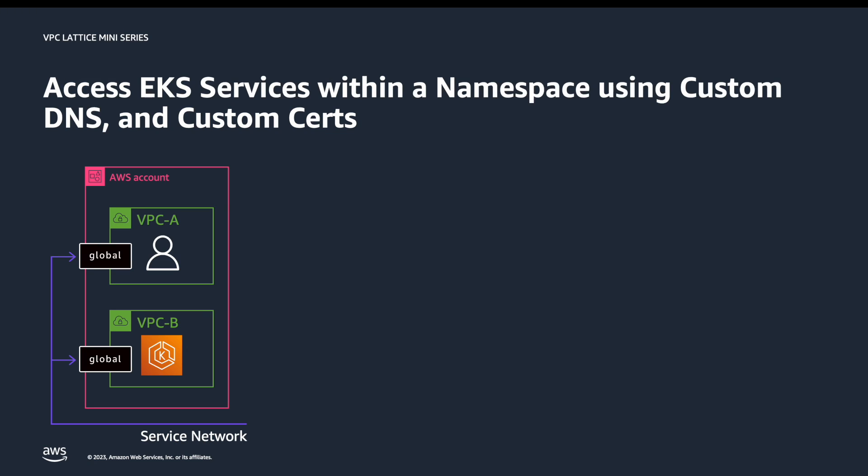In this example, we'll be using two VPCs. In VPC A, I have a Cloud9 client running on an EC2 instance. I'll use this both to control my cluster, deploy my YAML files, and also to test access to the VPC Lattice service. My EKS cluster will be running in VPC B. We'll start out by creating a custom certificate in AWS Certificate Manager. This needs to match the domain name we wish to use for the VPC Lattice service itself.